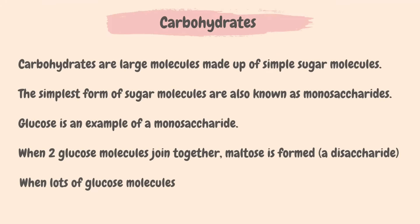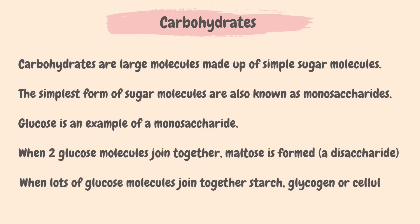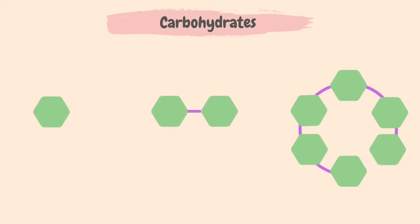When lots of glucose molecules join together, starch, glycogen, or cellulose can form — they are called polysaccharides. A monosaccharide is a single sugar molecule, a disaccharide is when two sugar molecules are linked, and a polysaccharide is when many sugar molecules are linked.